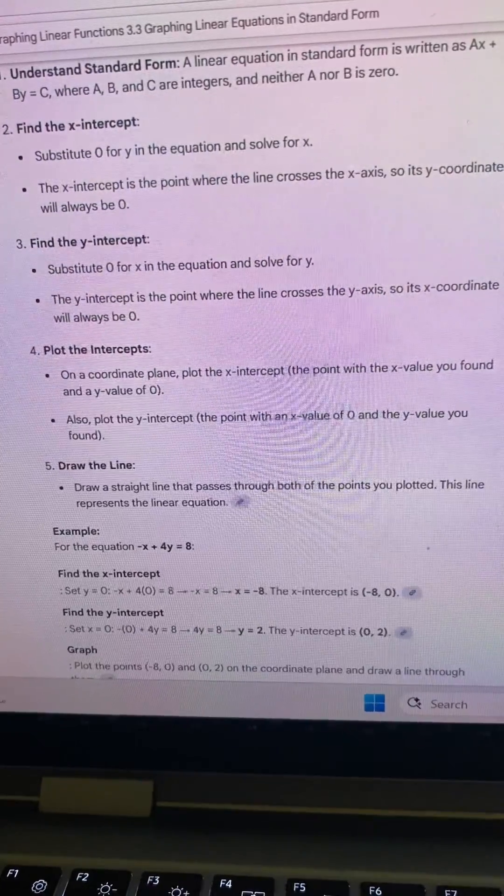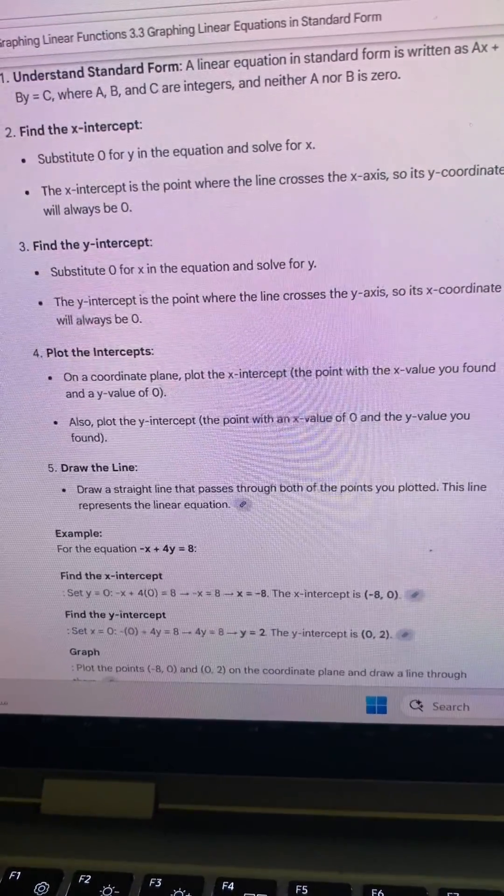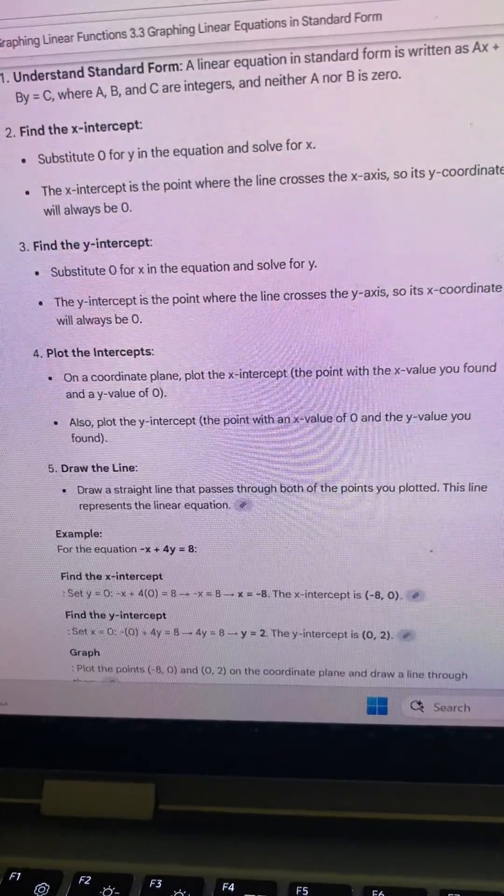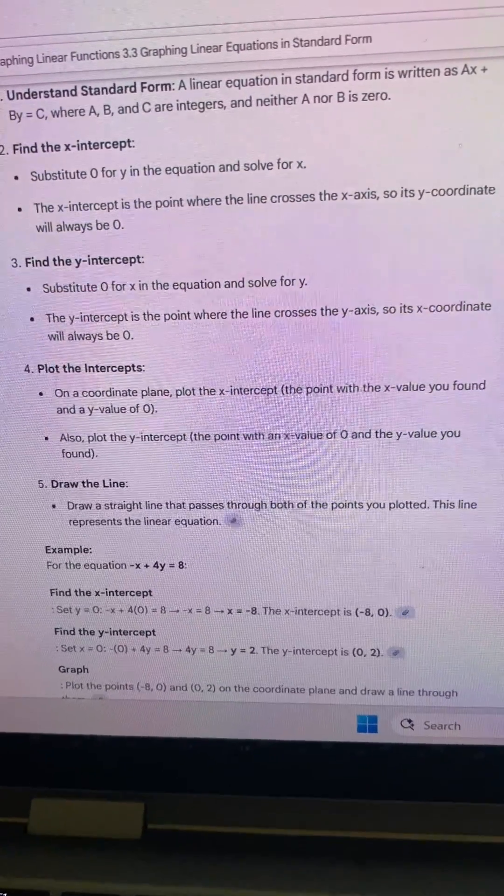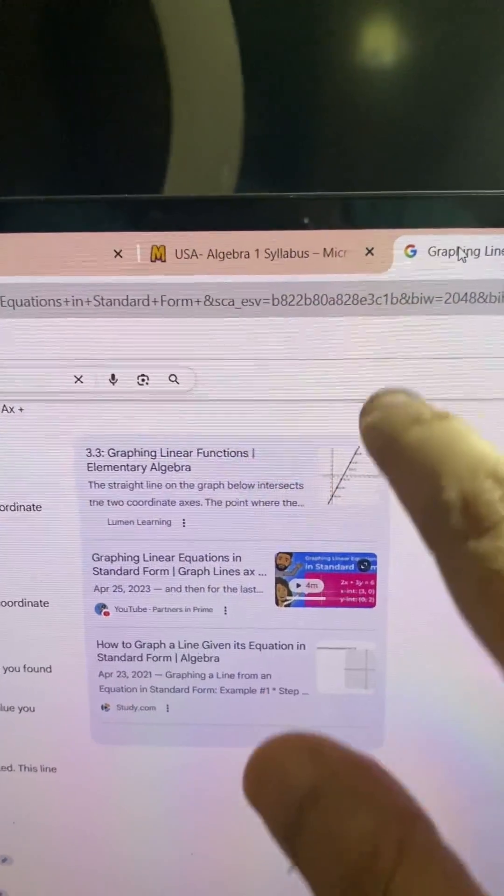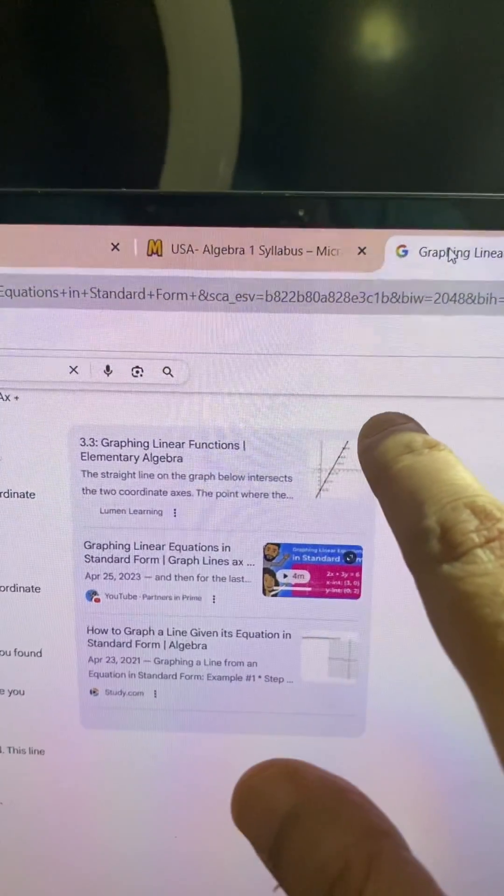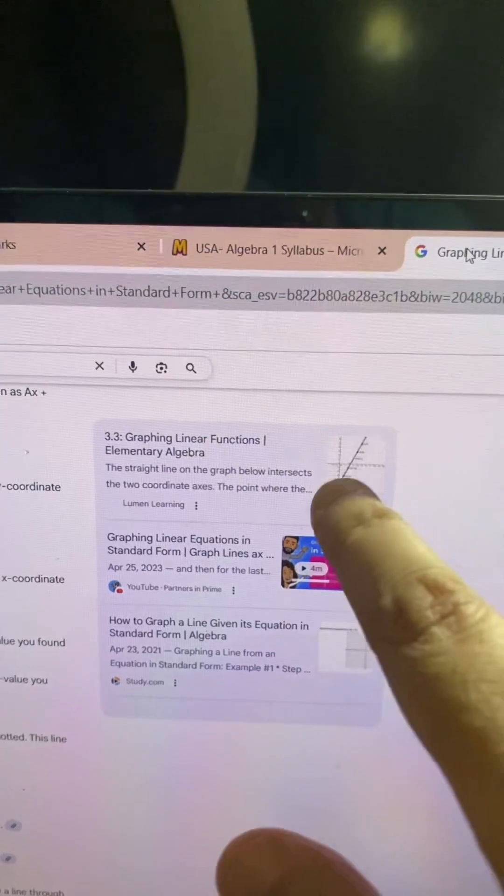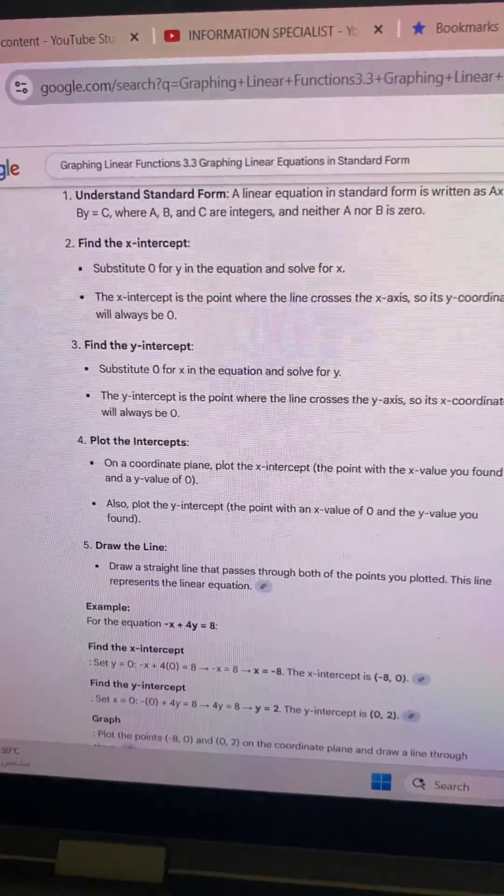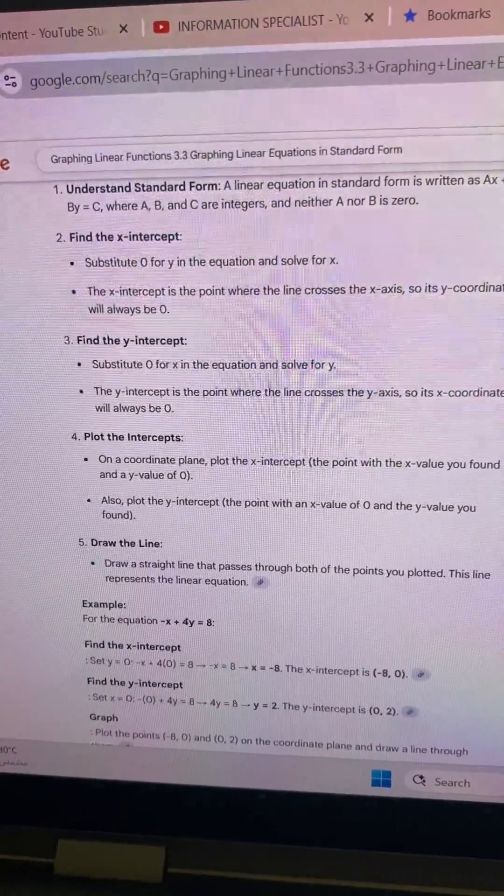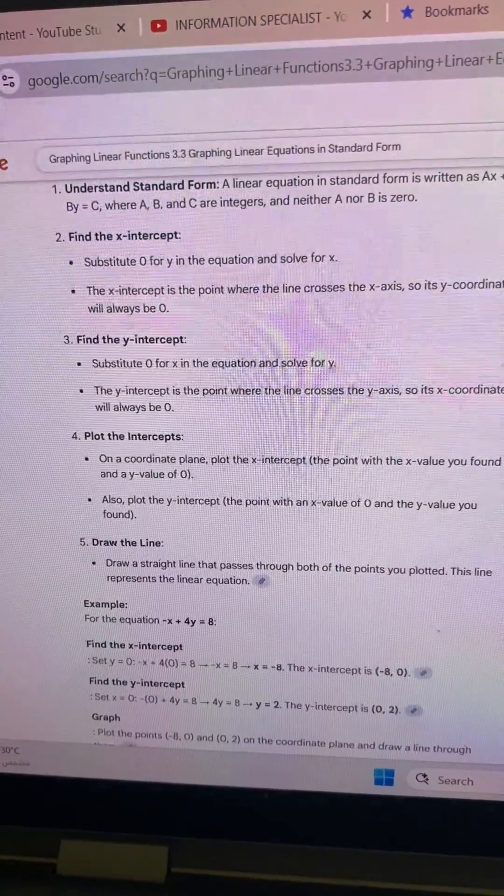Draw a straight line that passes through both the points you plotted. This line represents the linear equation. You see here in the graph, you draw a straight line through the graph you plotted here. This is elementary algebra linear equation. Draw the line. That's it.